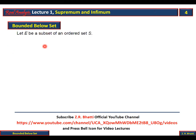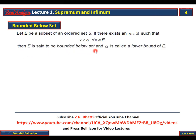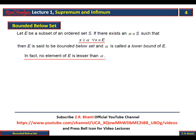Ab bounded below set ki definition. Yeh bounded above set ki definition ka ulta hoga. Let E be a subset of an ordered set S. If there exists an alpha belonging to S such that x is greater than or equal to alpha for all x in E — yani E ka koi bhi element alpha se chota nahi hai — then E is said to be a 'bounded below set' and alpha is called a 'lower bound' of E.